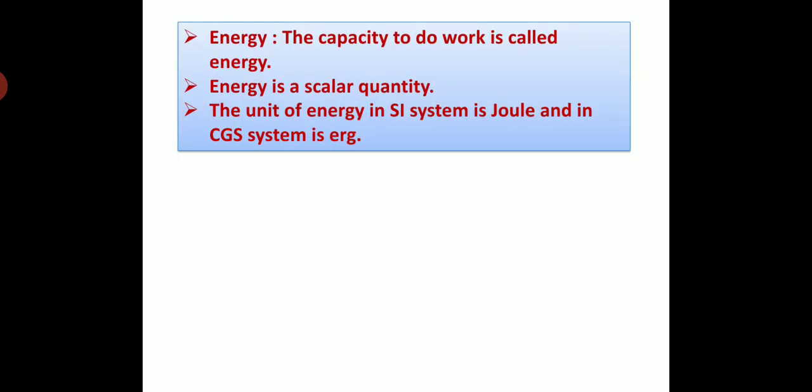Energy: The capacity to do work is called energy. Energy is a scalar quantity. The unit of energy in the SI system is joule and in the CGS system is erg.